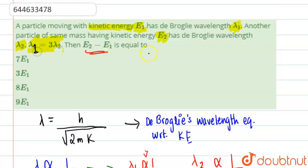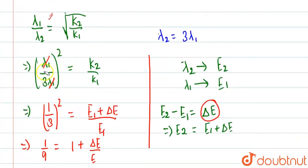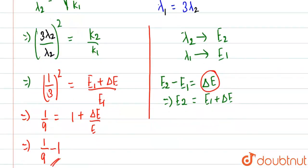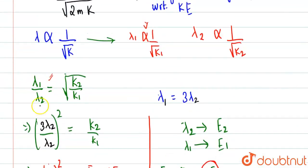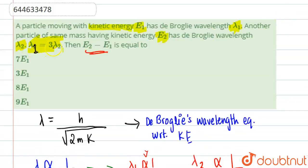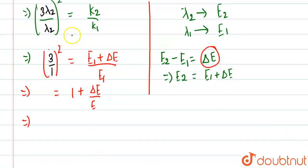Now we correct everything. λ₁ is thrice of λ₂, so we write 3λ₂ in place of λ₁. This gives us 3 on top and 1 on the bottom, so squaring gives 9 on the left side. So: 9 = (E₁ + ΔE) / E₁, which means 9 - 1 = ΔE / E₁.